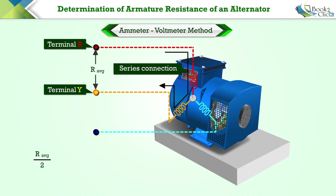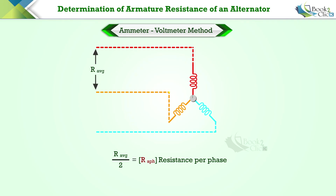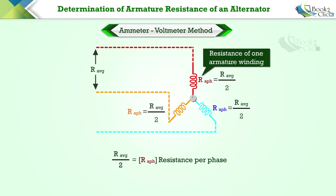Divide this average resistance by two to get the per-phase resistance of the alternator. By following this procedure, we can calculate the resistance offered by one phase, or one armature winding, of the alternator using the ammeter-voltmeter method.